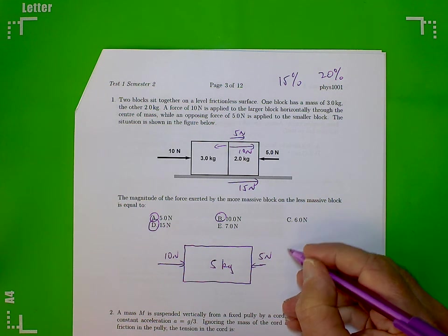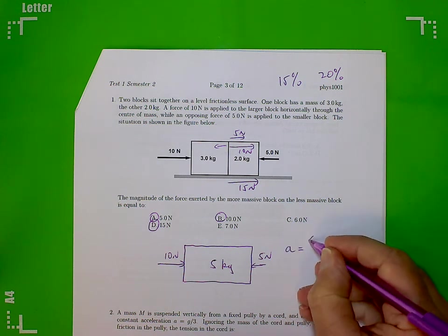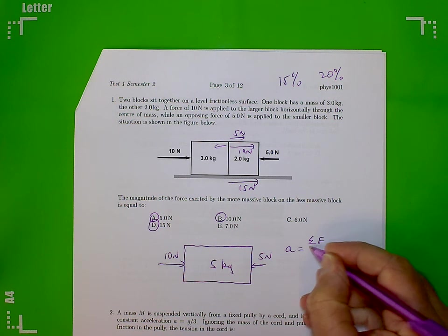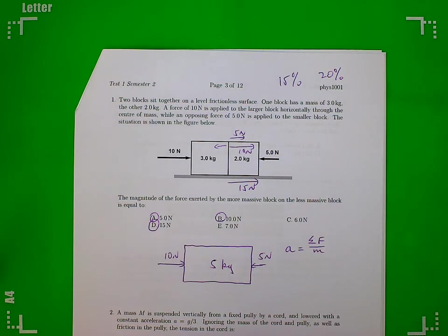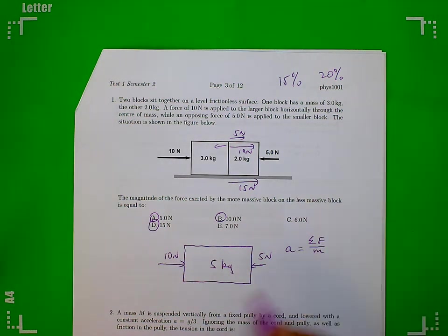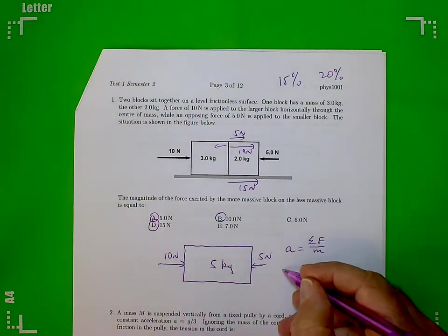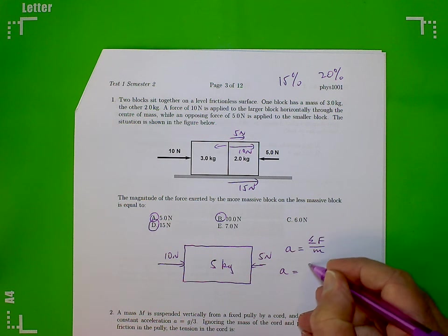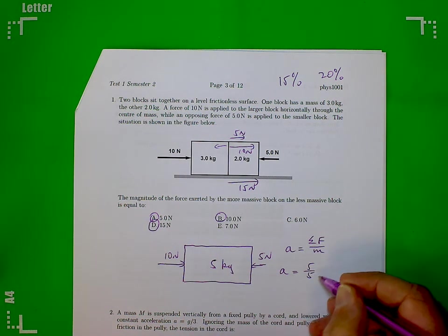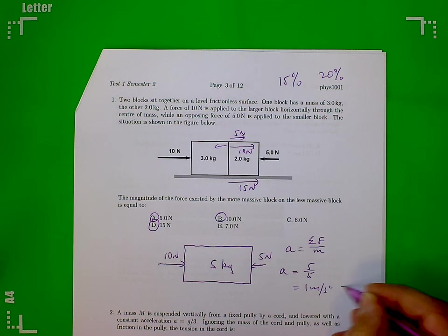Newton's laws say that acceleration equals the net force on the block divided by its mass. Now what's the net force? The net force is 10 to the right and 5 to the left, so the net force is 5 to the right. So we get a equals 5 over 5, which is 1 meter per second squared, and it's to the right. Okay, so that's the acceleration of both blocks.